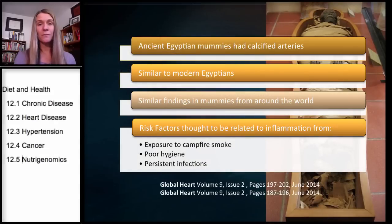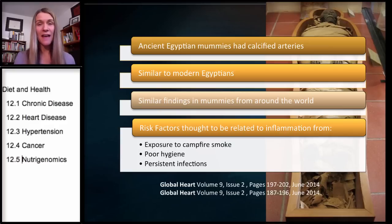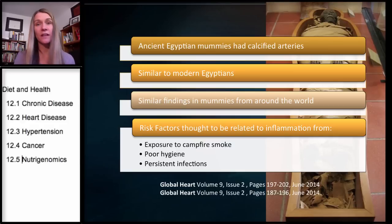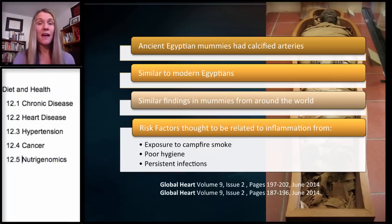Interesting research that came out in June 2014: when whole-body CT scans were performed on ancient mummies, researchers found they had calcified arteries. This is just the calcium deposits within the artery linings — it can't actually confirm atherosclerosis, since you won't see the smooth muscle lining, LDL, or macrophages. You're just seeing the calcium, which is a representation of how much atherosclerosis they may have had when they died.